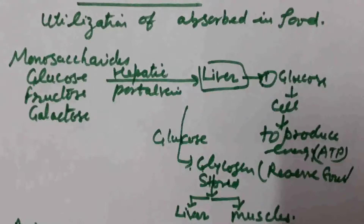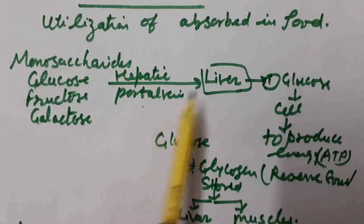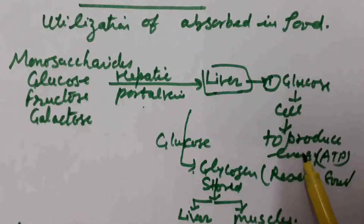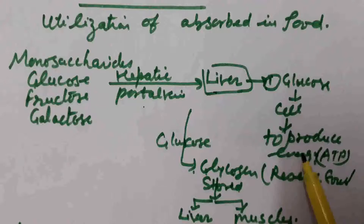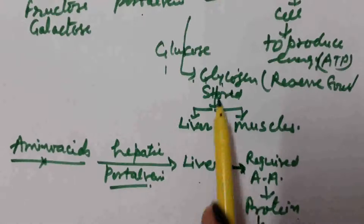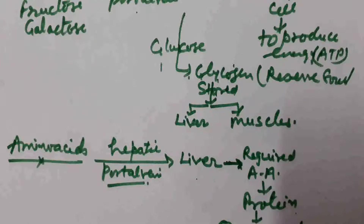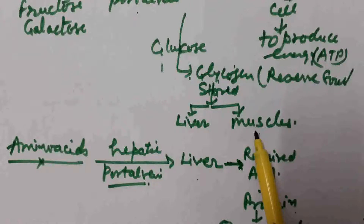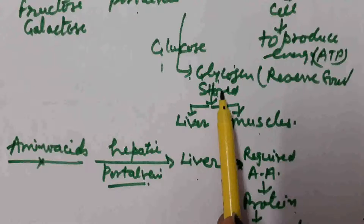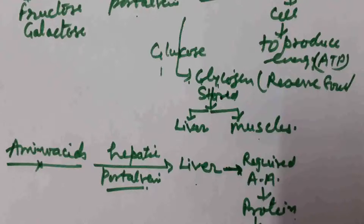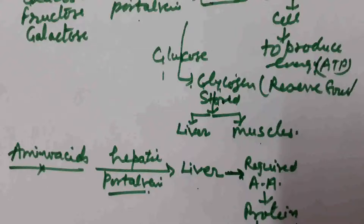What is the fate of monosaccharides? Monosaccharides also through the hepatic portal vein reach the liver. Some of the glucose is utilized by the cell to generate energy for various working of the body, and some of the glucose is converted into glycogen. Glycogen is the stored food in our body, stored in the liver as well as in muscles. Whenever glucose is further required and not available, this reserve glycogen is converted back into glucose and utilized by our body. This is the process of assimilation.